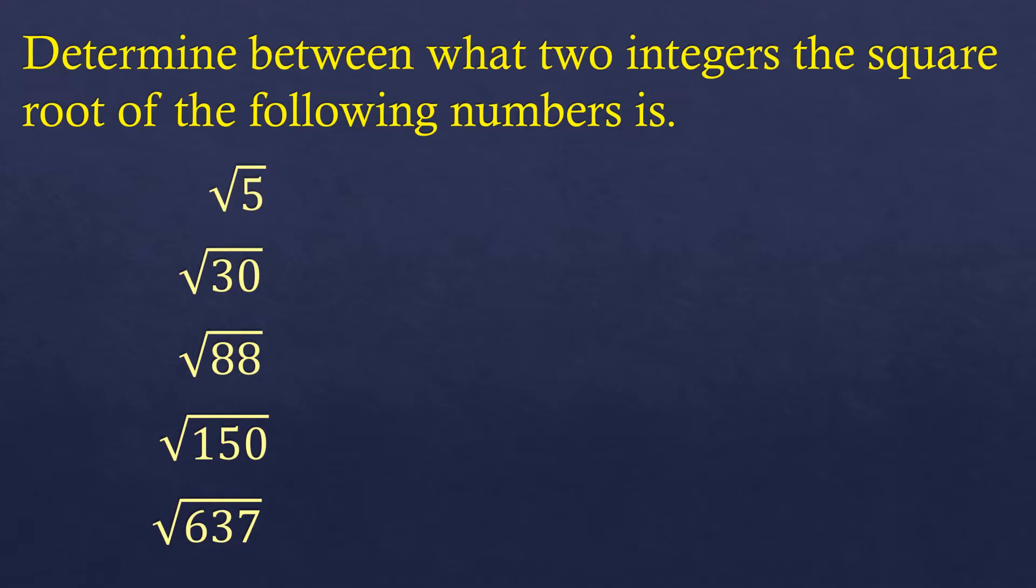So this is how you do it. For square root of 5, what you're going to do is look for the closest number to 5 where you can get a root, but it must be smaller than 5. The closest number smaller than 5 which has an integer root is 4. Square root of 4 is 2.